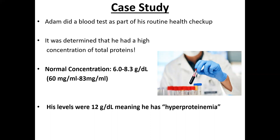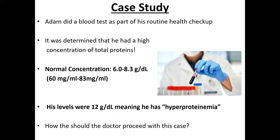Adam's concentration of proteins was 12 grams per deciliter. This indicates that he has a case of hyperproteinemia — an abnormal increase in total proteins in the blood. How should the doctors proceed with this case? Think about it for a few seconds.